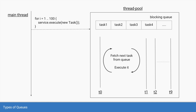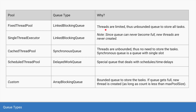Before we go into the types of queues, let's summarize what we learned earlier: whenever a new task is submitted to the thread pool it is saved in a queue of type blocking queue, and then all the threads go to this queue, fetch a task, and execute it. This queue can be of different types based on the type of executor.